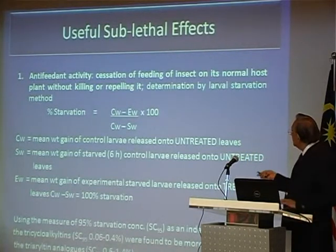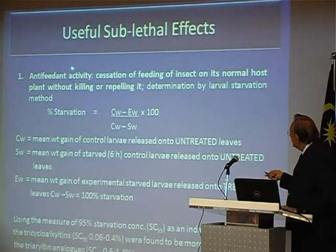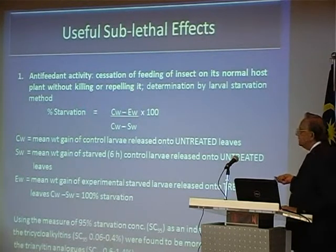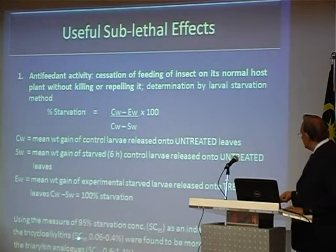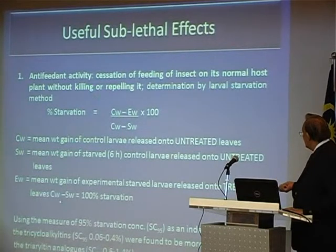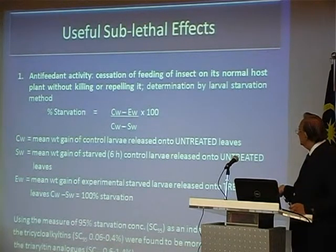We are trying to exploit what is called the sublethal effects. This larvae I just showed — if I can prevent the larvae from eating, that is anti-feeding activity, without killing or repelling it, then it will starve itself to death. This is called SC95, which is a starvation control at 95% starvation. We have done this with organotins, and at these levels they are very, very effective. So we can use sublethal levels of organotins; you don't have to go to the LD50 values anymore.